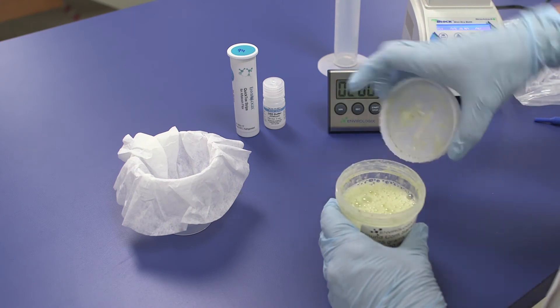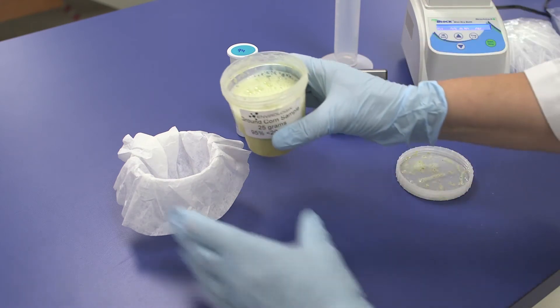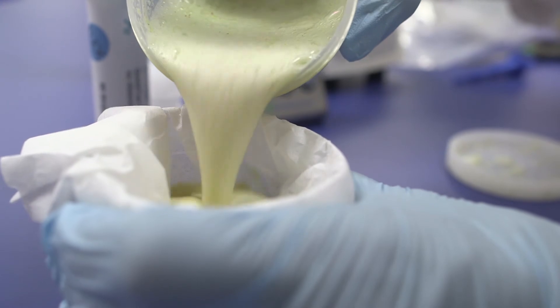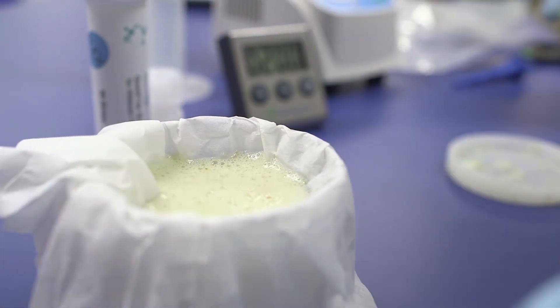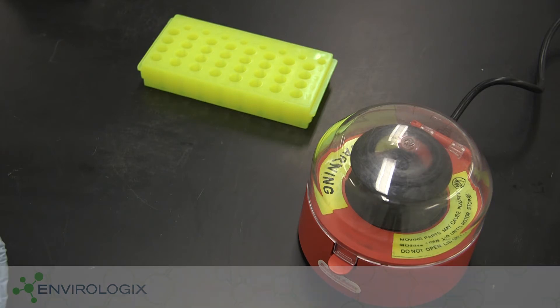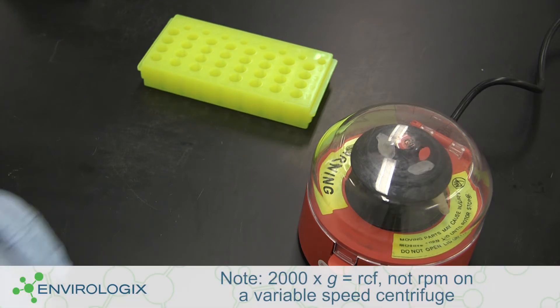Clarify the sample in one of the following ways: Filter the mixture for up to two minutes into a new cup through an approved Bunn coffee filter, or centrifuge for 30 seconds at 2,000 times G.